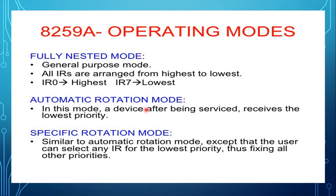In the automatic rotation mode, a device after being serviced receives the lowest priority — the device just serviced receives the seventh priority. In specific rotation mode, the interrupt request serviced is assigned the lowest priority in automatic rotation mode, whereas in specific rotation mode, the lowest priority can be assigned to any interrupt input, either IR0 or IR7, which fixes all other priorities.